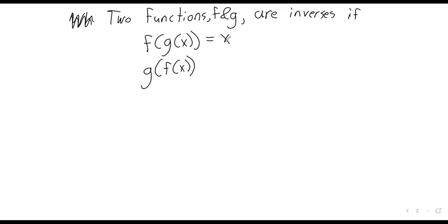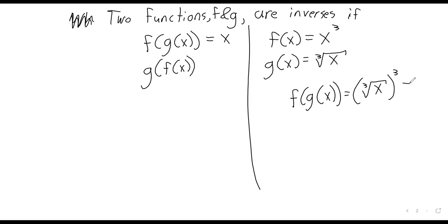Probably the simplest or at least the quickest example of this behavior is x cubed versus the cubed root of x. These are inverses of each other because if we compose them, the cubed root and the cube eliminate each other. And likewise, if you compose them in the other direction, the cubed root and the cube eliminate each other.